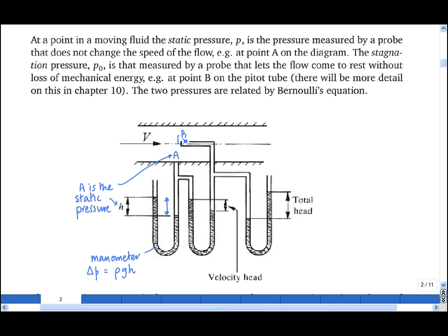At point B, I have brought the fluid to rest without loss of mechanical energy, and this measures the stagnation pressure, i.e. the pressure at a stagnation point. And if the flow velocity is non-zero, then B is a higher pressure than A.